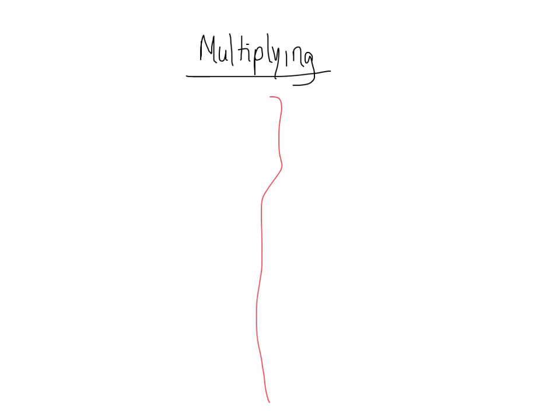Alright, so if we have to find 2 out of 5 times 15 out of 8. So one of our options is to multiply straight across numerator by numerator and denominator by denominator and then simplify. So 2 times 15 gives us 30 and 5 times 8 gives us 40.